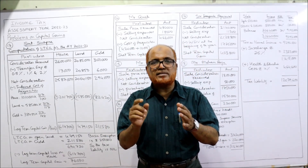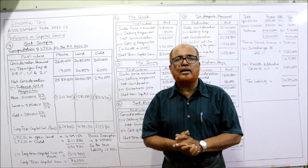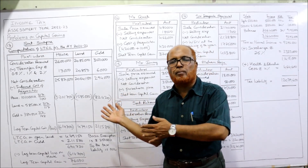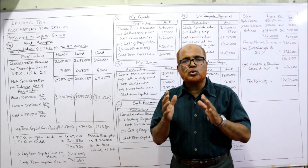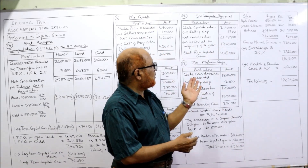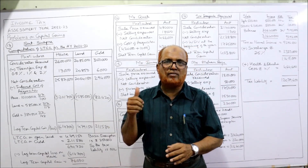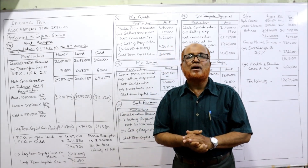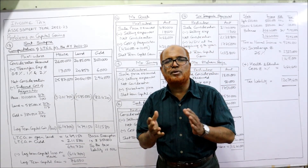So you have seen that in every problem, one or two new points are covered. Always maintain notes — write down the important provisions I explain; that way you can remember them and confidently write in examinations. Don't underestimate short problems — in examinations they will twist the problem, so you need perfect knowledge of the provisions. We have now completed 18 problems on capital gain. If you are satisfied, give a like, share my channel among your friends and groups, and subscribe if you haven't yet.